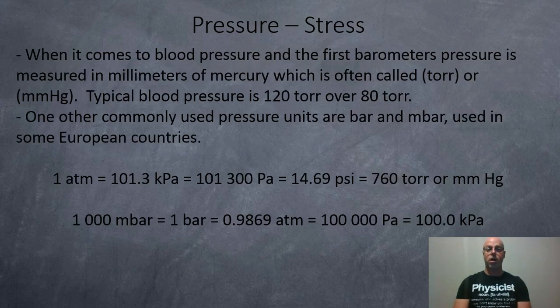When it comes to blood pressure, the first barometers, pressure is measured in millimeters of mercury, which is often called a torr, or millimeters of mercury. Hg is the symbol for mercury. Typical blood pressure is 120 torr over 80 torr. One other commonly used pressure unit is the bar and the millibar. This is used in some European countries.